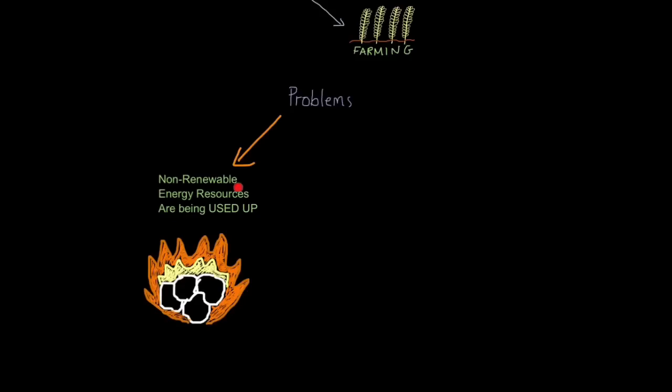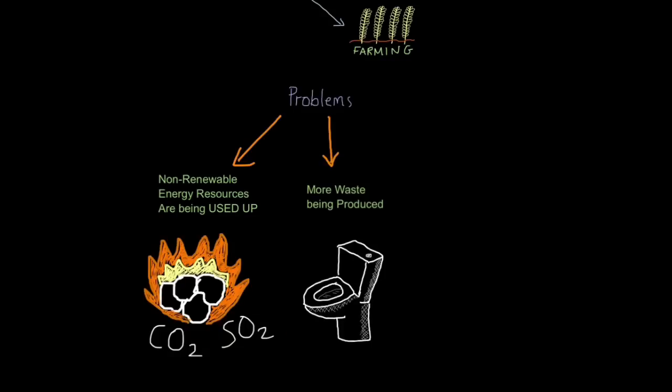So here's some problems of our growing population. Firstly, non-renewable energy resources such as coal, oil and gas are being used up. Because they form so slowly, we're using them up at a rate which will result in them being completely depleted. In other words, we will not be able to rely on them in the future. Also burning fossil fuels releases harmful gases responsible for global warming and acid rain, carbon dioxide and sulphur dioxide for example.